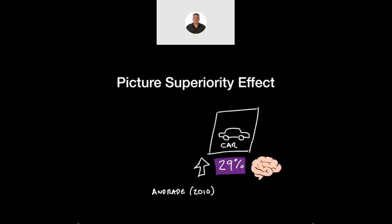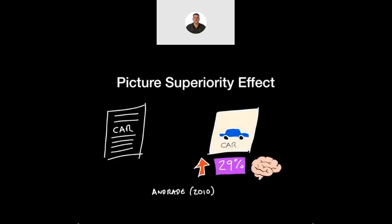If we move on to the picture superiority effect, this came sort of later on. Android in 2010 gave this idea that if you draw the picture of the car, or you see the picture of the car, you have a 29% more chance of being able to recall that information later. So if children are going through anything where you're asking them to retrieve information at a later date, by simply asking them to draw pictures of the things they're talking about, to represent it in a way that makes sense to them, there's probably a much higher chance that they'll remember it.